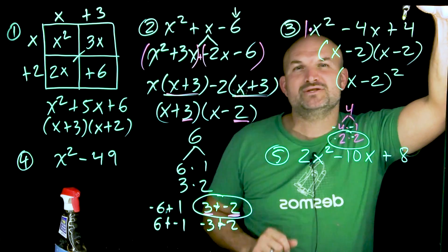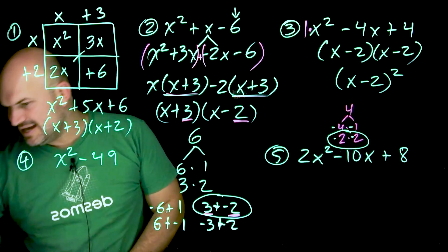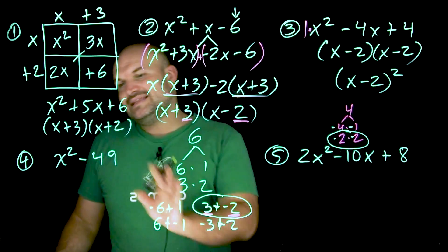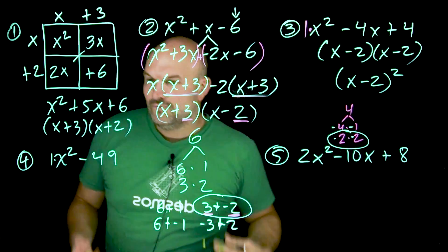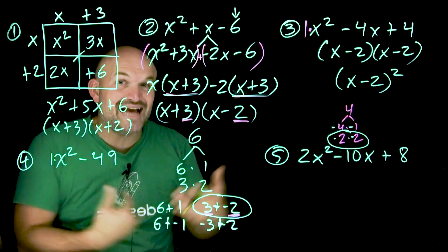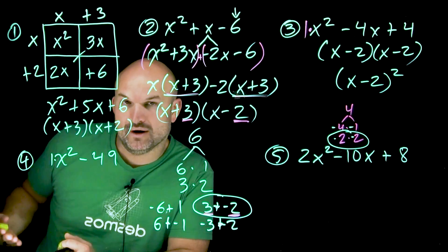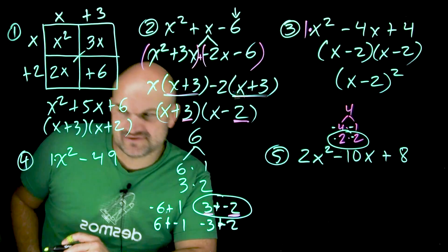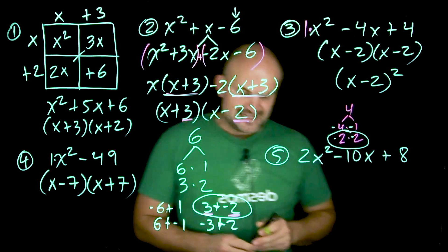When you have a binomial like x² − 49 with no middle term, look for the difference of two squares. Both terms are perfect squares and there's no middle term, meaning the middle terms cancel — one factor must be positive, one negative. Two numbers that are the same but opposite in sign multiply to −49: that's −7 and +7. So x² − 49 factors to (x − 7)(x + 7).